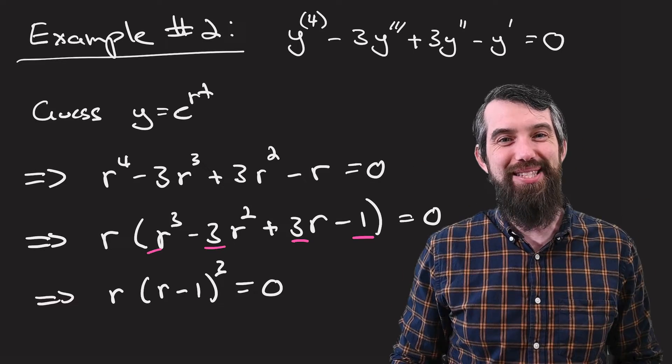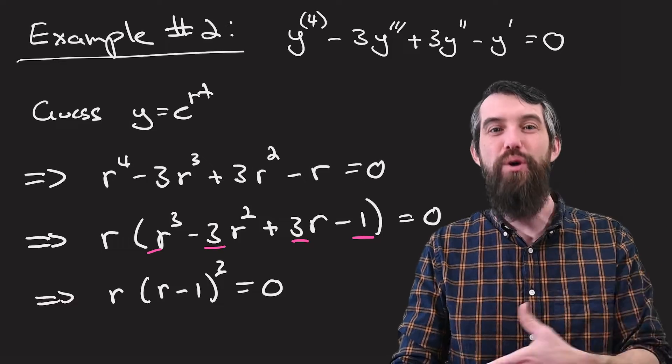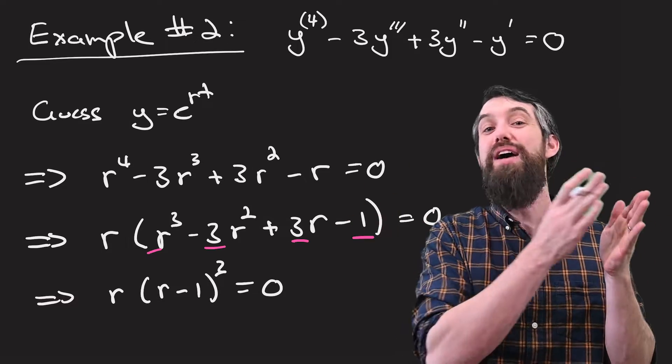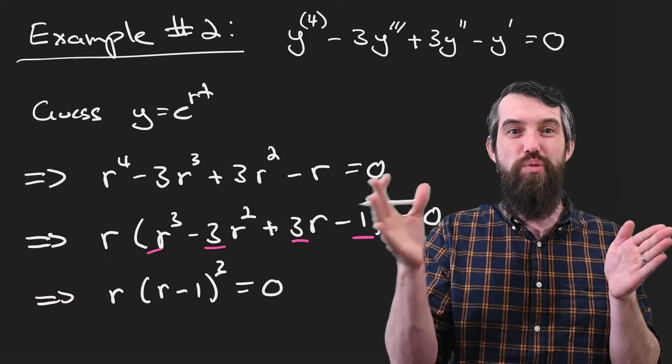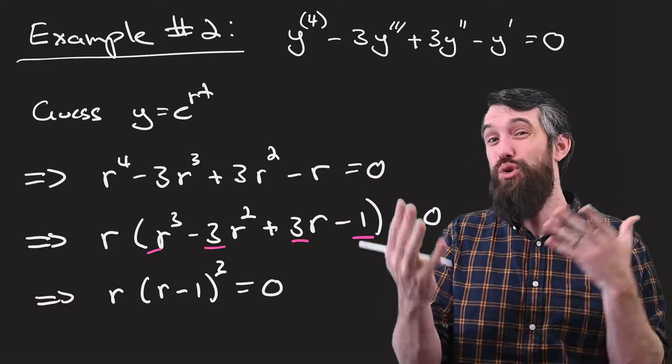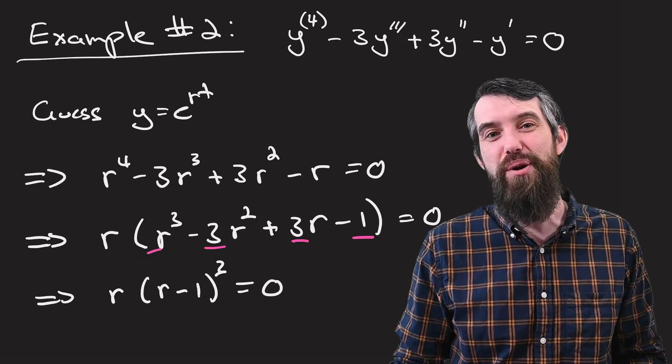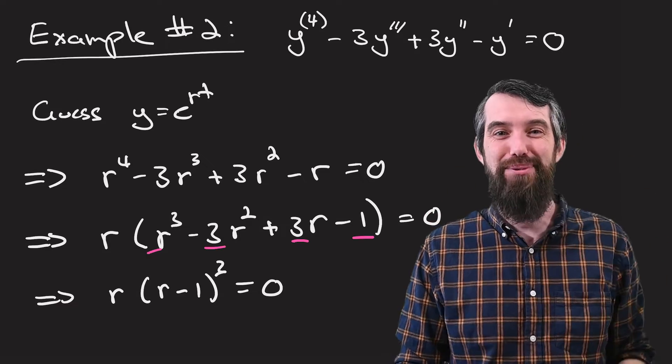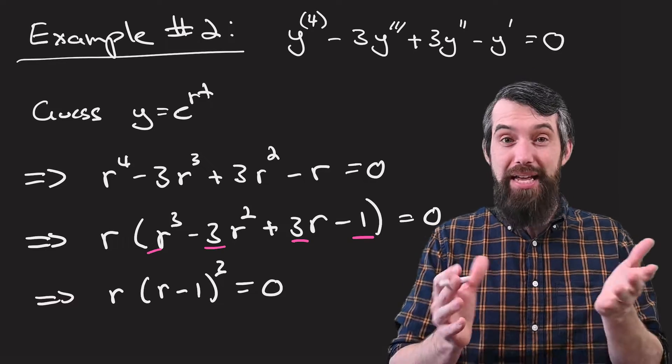I just sort of recognize this pattern because I've seen it before with Pascal's triangle, that r minus 1 cubed, if I wanted to expand that, would have those coefficients of 1, 3, 3, 1, possibly with some signs. Or alternatively, you have to sort of guess and find that solution of r equals 1. If you factor it out, then what you'd be left with, you'd be able to do with the quadratic formula. Regardless, I have r times r minus 1 cubed equals 0.